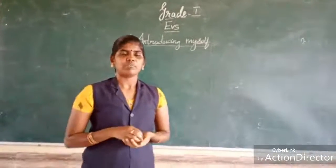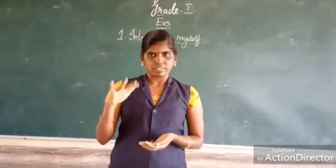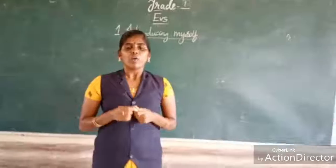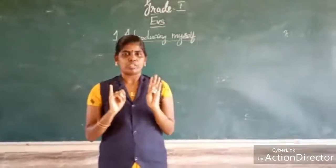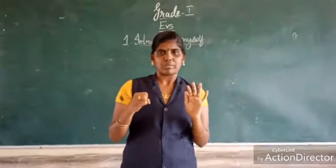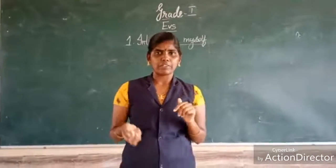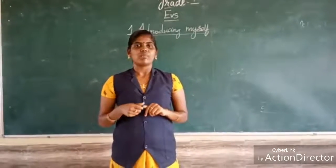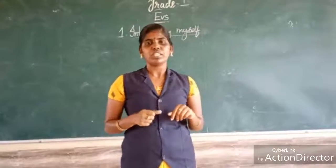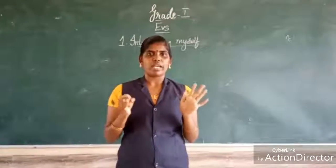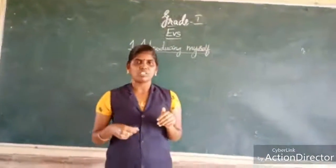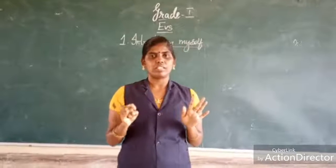Now just imagine I am a little girl — I am 6 years old. Now I am going to introduce myself. My name is Dia. I come from Musiri. I am 6 years old. 6 years old means my age; my age is 6.